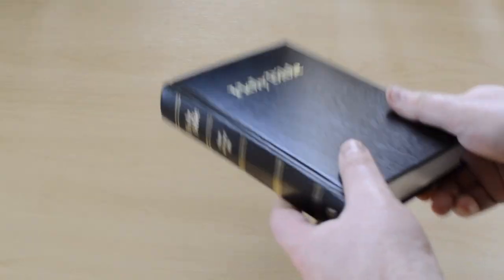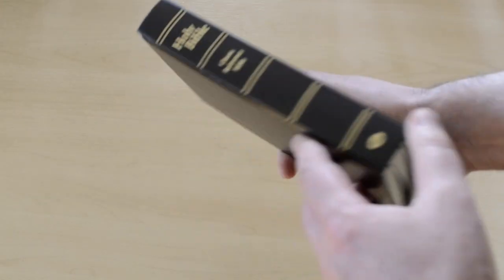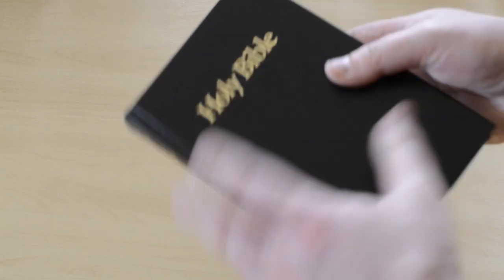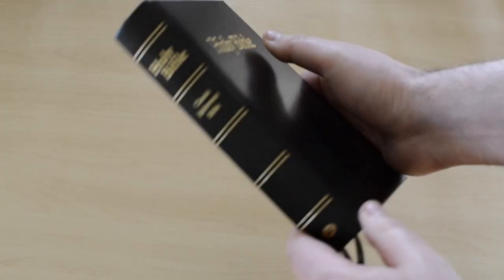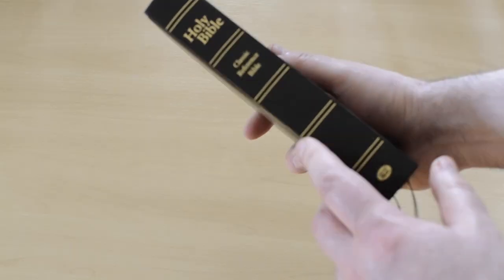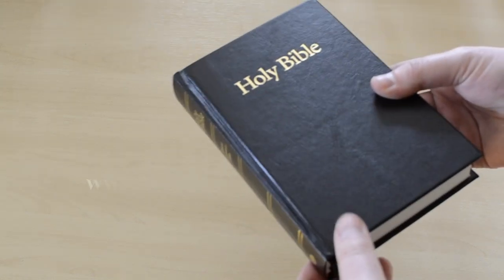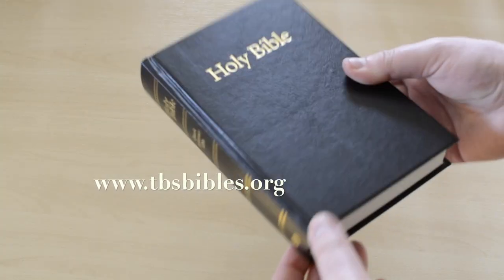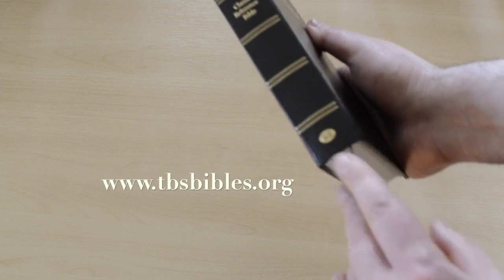So there you have it. This is a very nice edition. A portable hand-sized KJV Bible, the classic with all the references. Basically, a hand-sized Concord Bible by TBS.